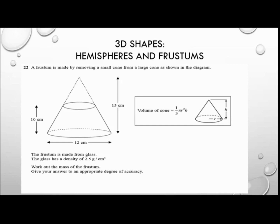Let's have a go at putting this into practice. I've managed to find this question on an actual GCSE sample paper. It says: a frustum is made by removing a small cone from a large cone as shown in the diagram. The frustum is made from glass. The glass has a density of 2.5 grams per centimetre cubed. Work out the mass of the frustum. Give your answer to an appropriate degree of accuracy. Pause the video, have a think about it, and when you're ready to hear the answer, just press play.